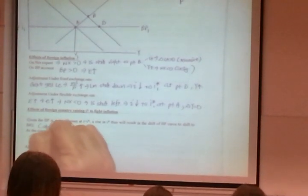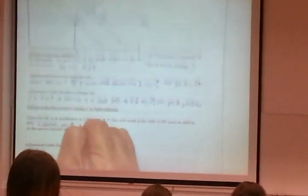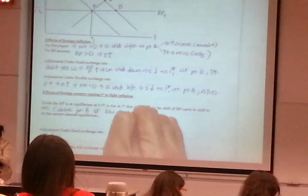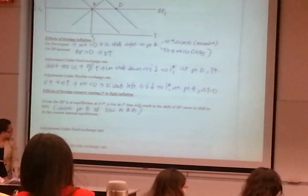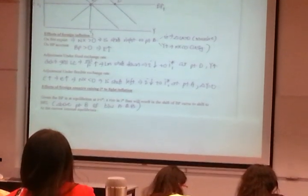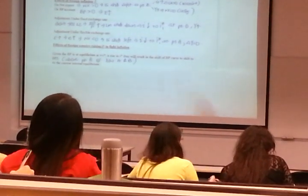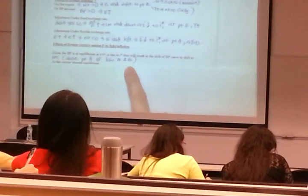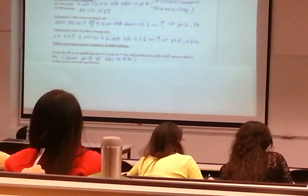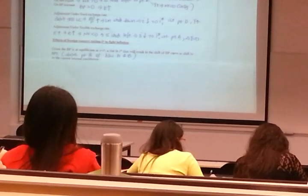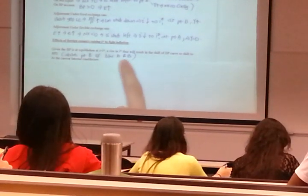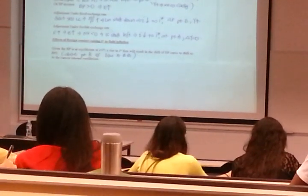So this will shift the BP up to BP2. It can be above point B or between A and B. So foreign interest rate goes up. Look at the diagram. You are at I star 1. But now the BP must shift up. So there is a choice between above point B or between A and B. In the lecture notes, we are going to demonstrate what is above point B. It's easier. You can go back and practice between A and B.